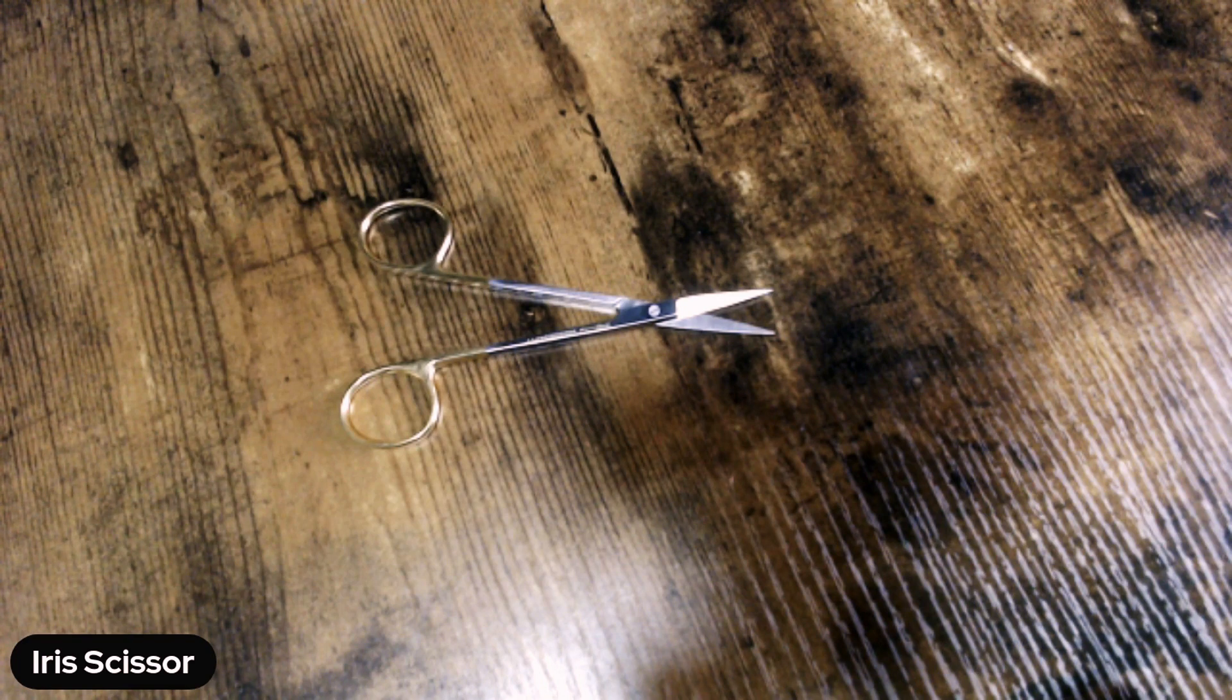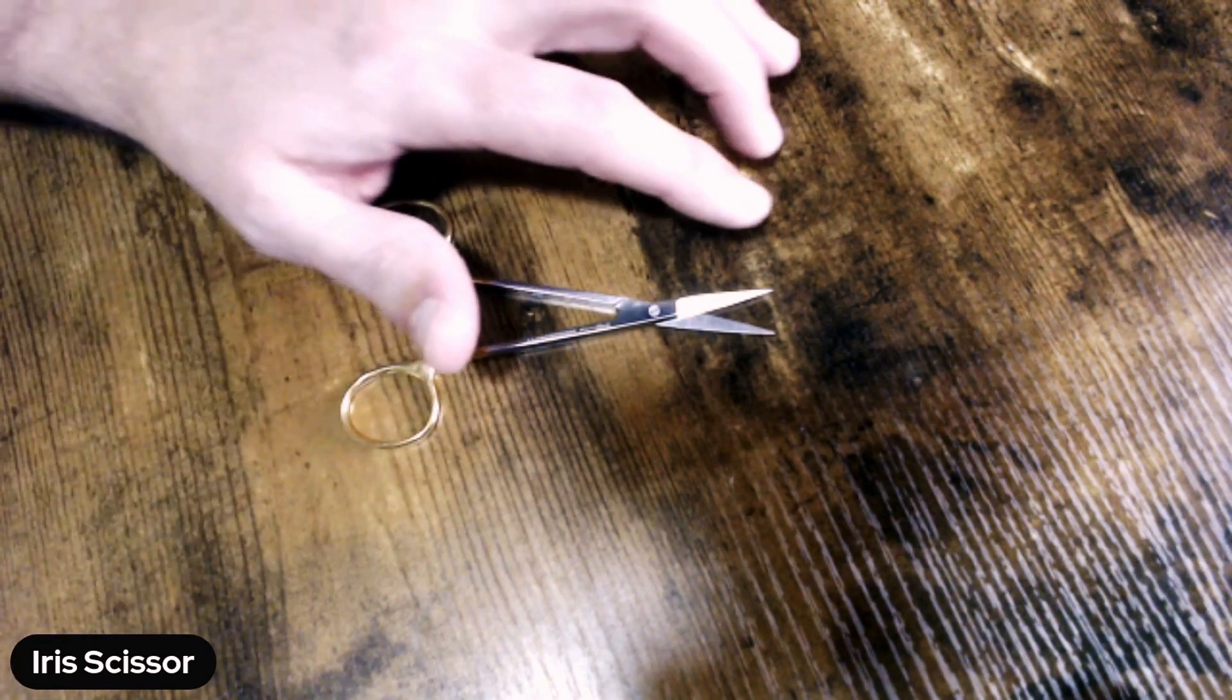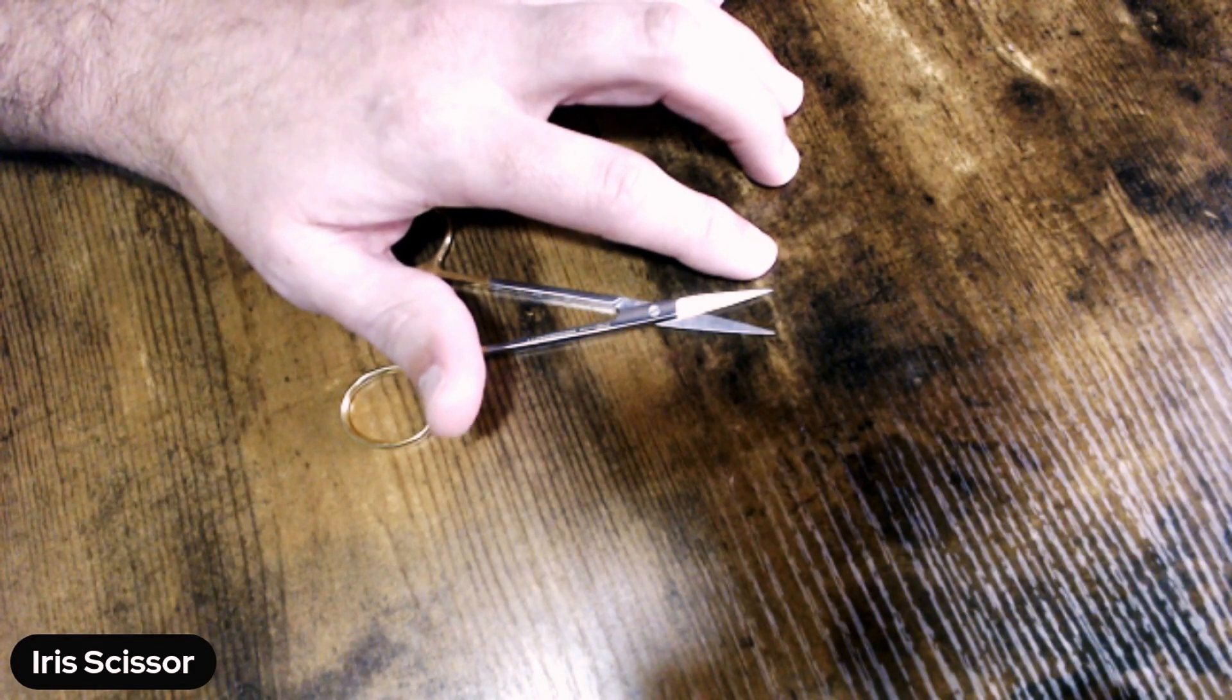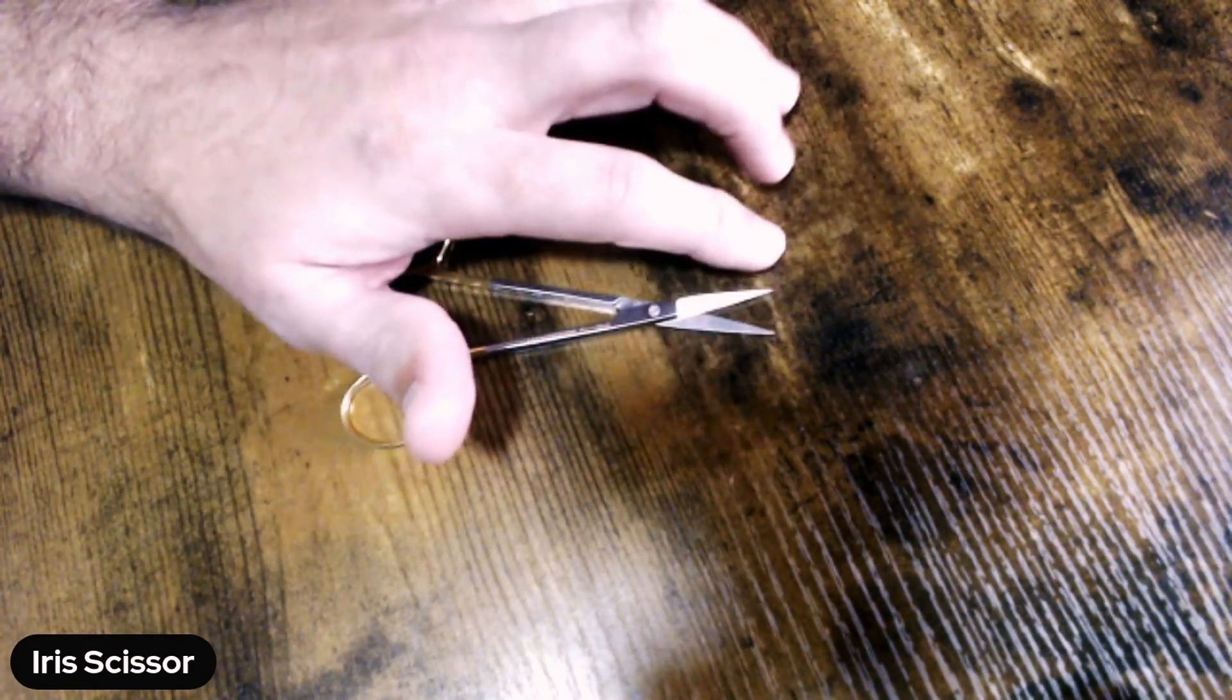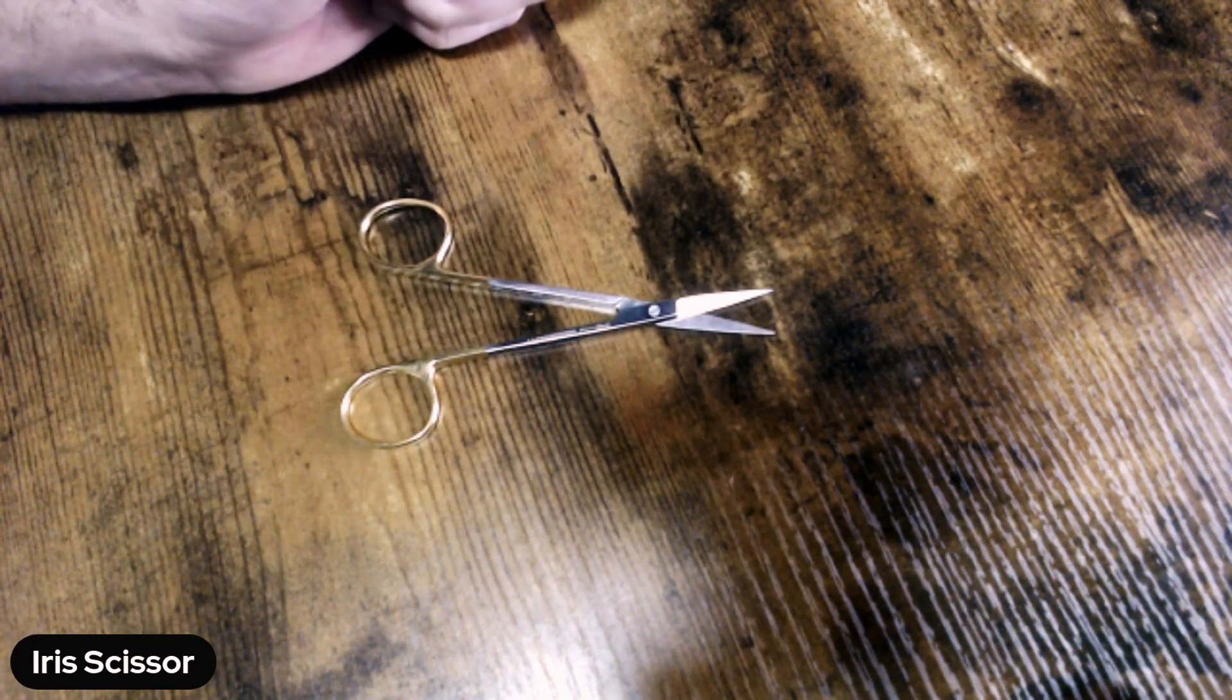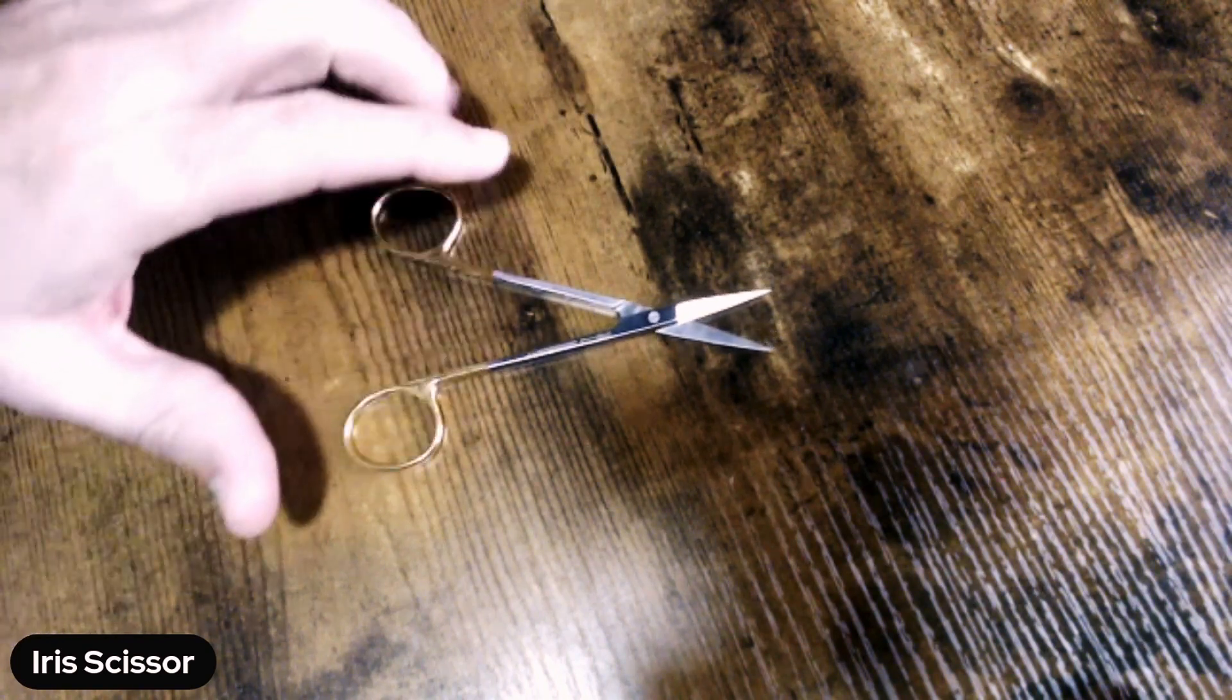As I mentioned in the intro, this particular iris scissor is a sharp-sharp. That's telling you that both of your blades have a sharp tip. Okay, as you're inspecting, keep close in mind obviously if the action has a smooth action up and down.